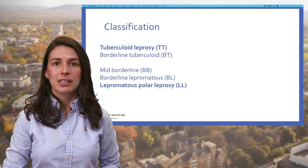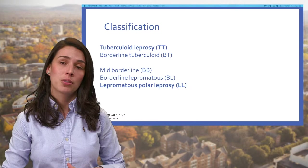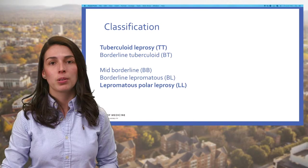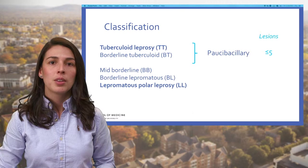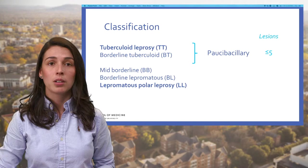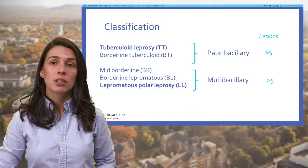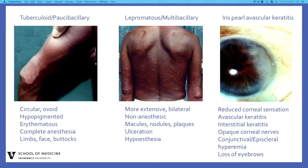The classification of leprosy is based on three criteria: clinical, histopathological, and immunological. We have identified five forms of leprosy across these criteria: tuberculoid leprosy, borderline tuberculoid, mid-borderline, borderline lepromatous, and lepromatous leprosy. Patients are divided into two groups for therapeutic purposes. The paucibacillary group includes tuberculoid leprosy and borderline tuberculoid, with less than five lesions. The multibacillary form includes mid-borderline leprosy and lepromatous polar leprosy.